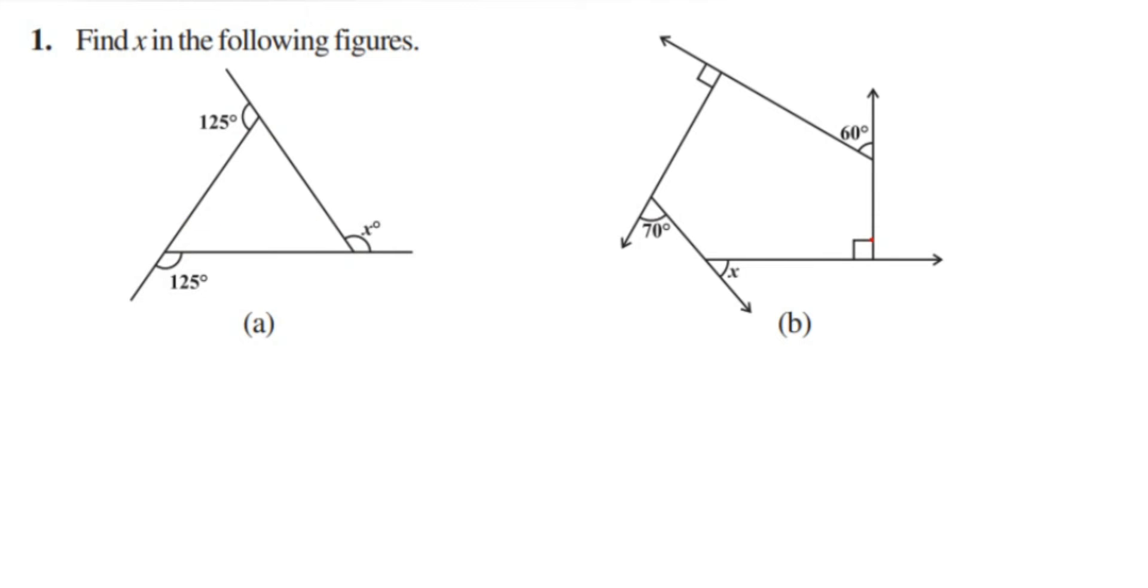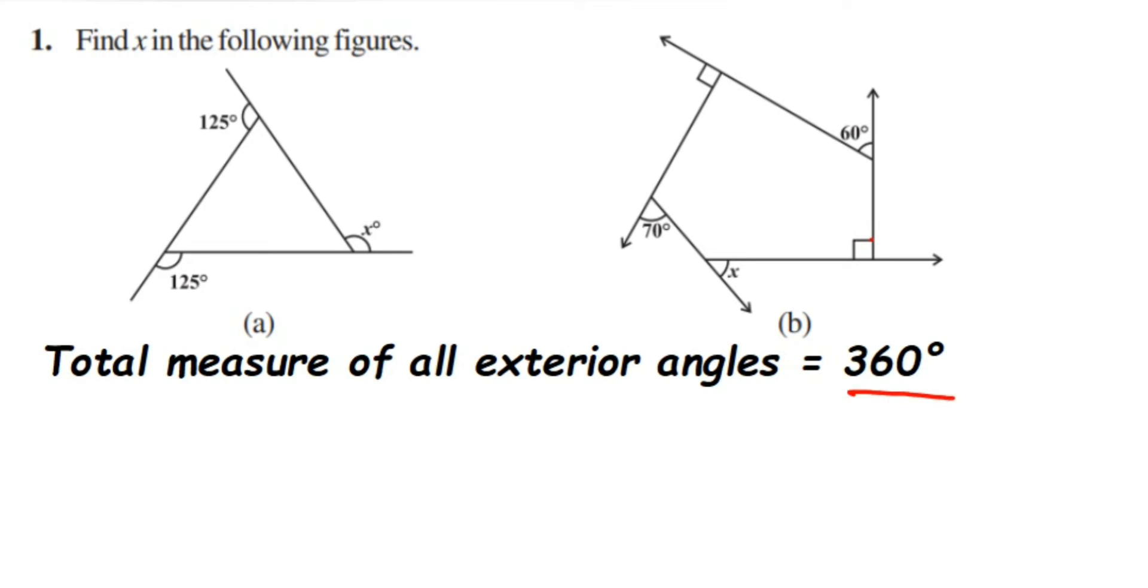Sum of all exterior angles is equal to 360 degrees. So it does not matter what type of shape it is, it can be a triangle or pentagon or hexagon, whatever polygon we have given. When you add up all the exterior angles, it is always equal to 360 degrees. So we are going to use that property here.